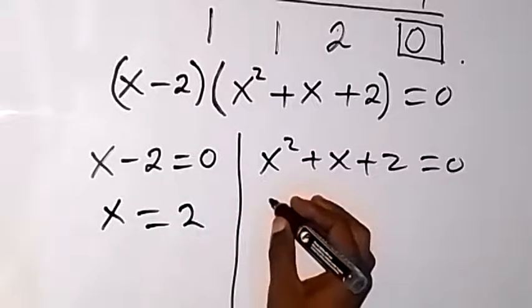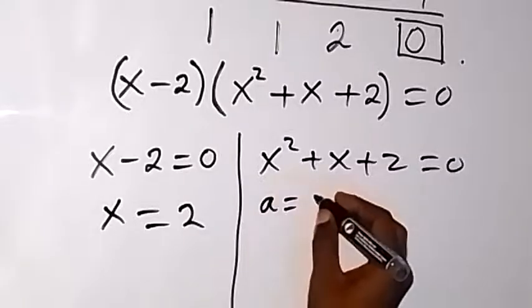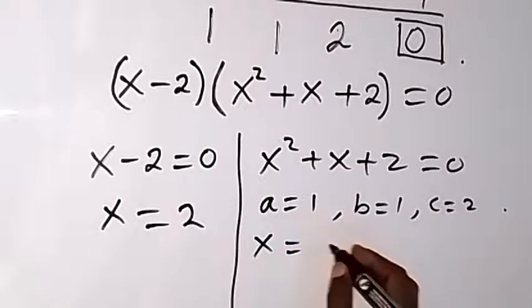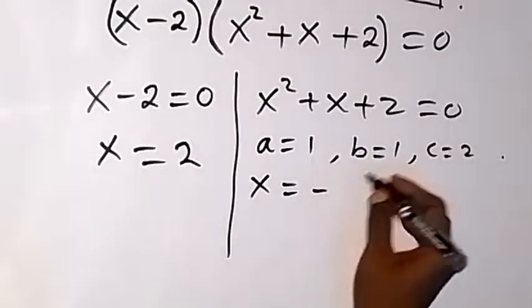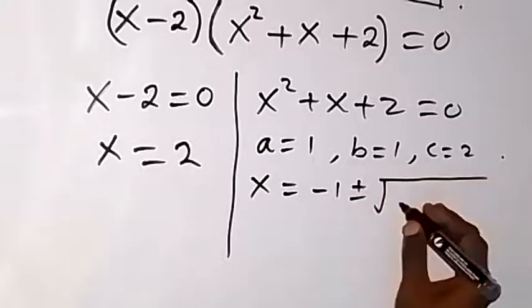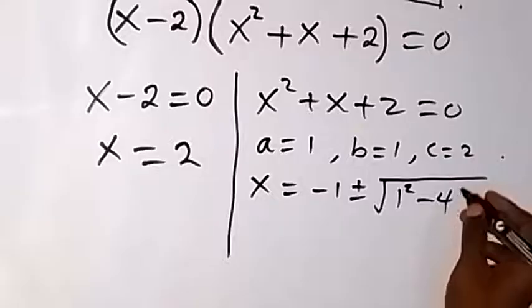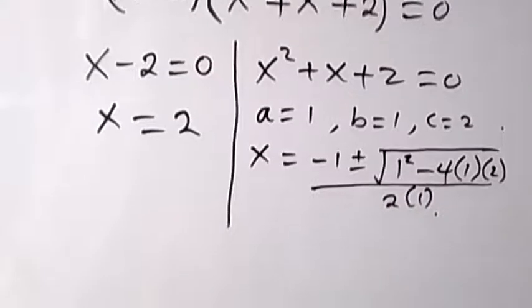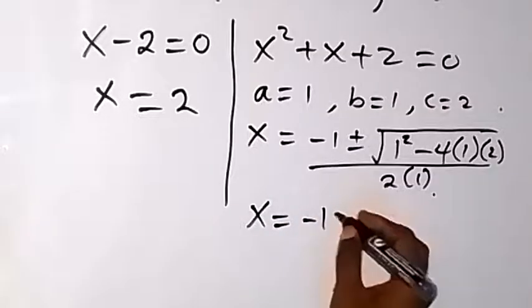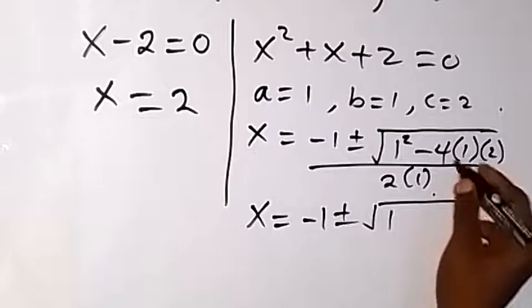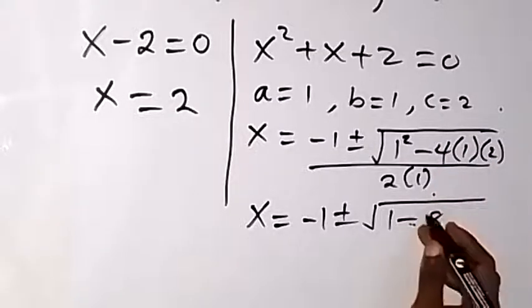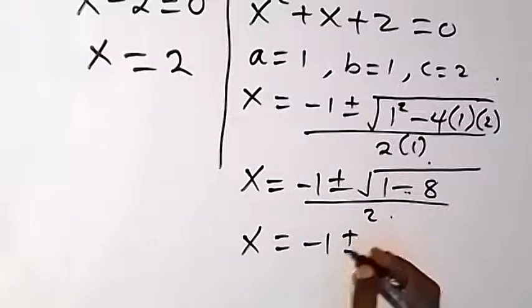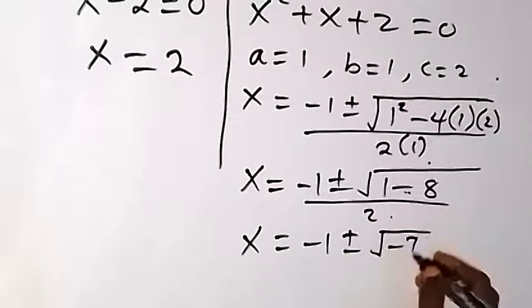Now let's find x from x squared plus x plus 2 equals 0. Comparing with the quadratic formula: a equals 1, b equals 1, and c equals 2. Using the quadratic formula x equals minus b plus or minus square root of b squared minus 4ac, all over 2a: that's minus 1 plus or minus square root of 1 squared minus 4 times 1 times 2, over 2 times 1. Simplifying: minus 1 plus or minus square root of 1 minus 8, over 2.